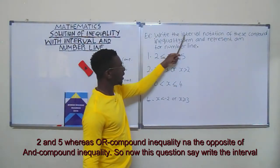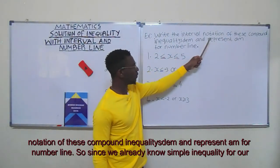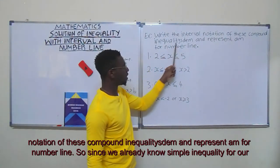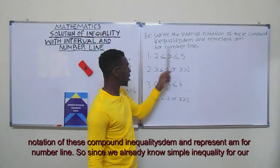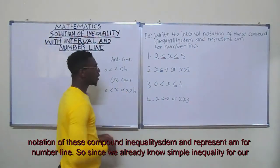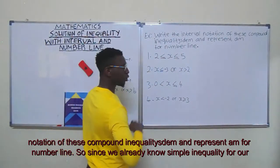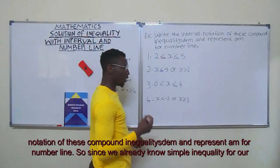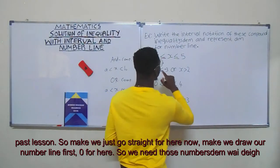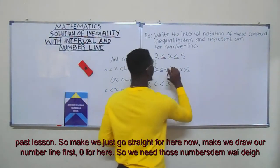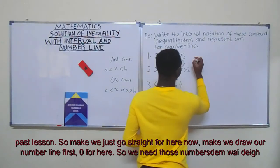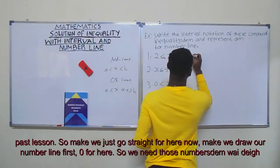The question says: write the interval notation of this compound inequality system and represent it on a number line. Since we already know simple inequality from our past lesson, we'll go straight ahead. Now we'll draw our number line first.